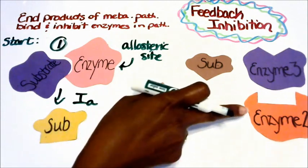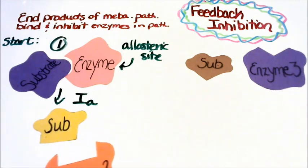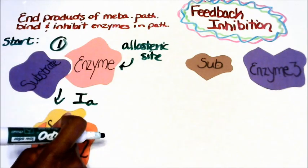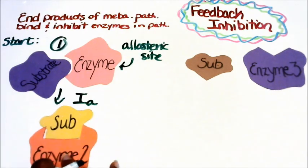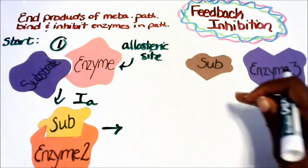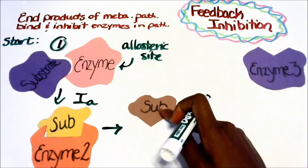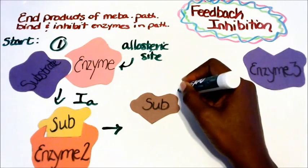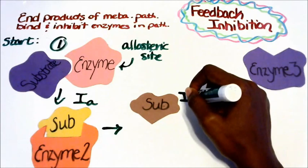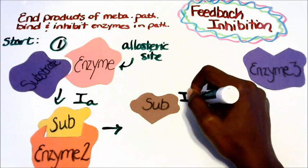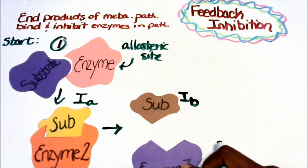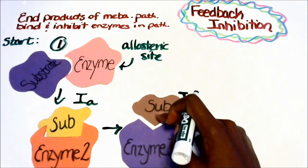And our enzyme number two, they bind. Next we have our intermediate B. Now in these steps, the intermediates can be four, five, six, doesn't matter, but in this example I'm just doing two.